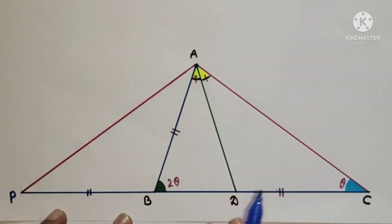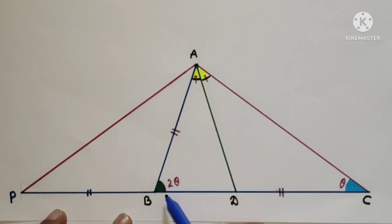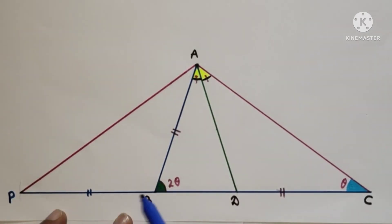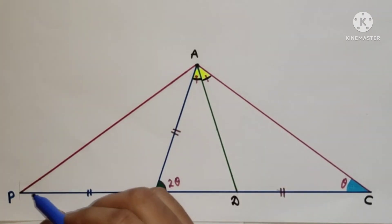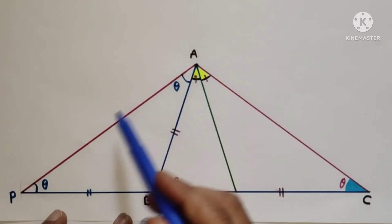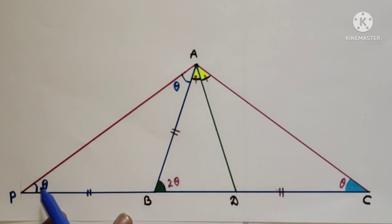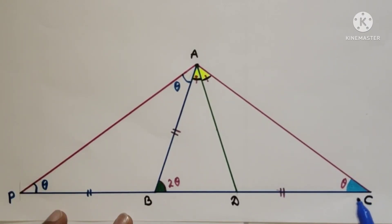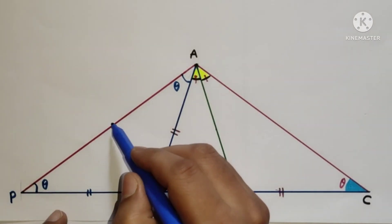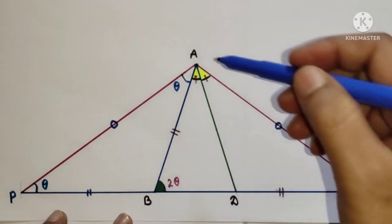Triangle BPA is an isosceles triangle. Since angle ABC is 2θ, it equals the sum of two remote interior angles, and since the triangle is isosceles, each base angle is θ. Now in triangle APC, angle APC is θ and angle ACP is θ, so base angles are equal. Therefore sides opposite to equal angles are equal, meaning AP is equal to AC.